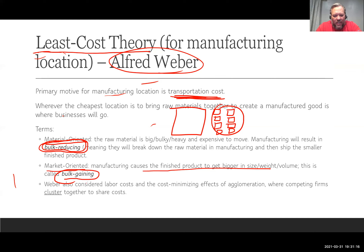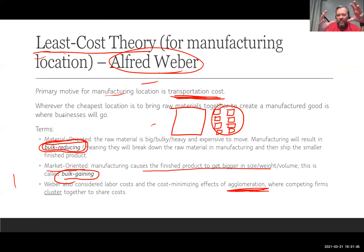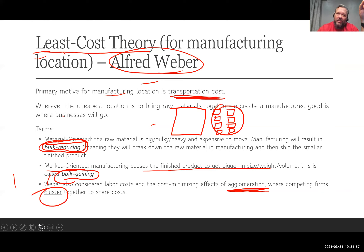Weber's least cost theory also discusses agglomeration — where competing companies in the same industry cluster together in the same location. By agglomerating, they can share larger infrastructure costs and minimize individual costs. Agglomeration — clustering together — is the key term here.